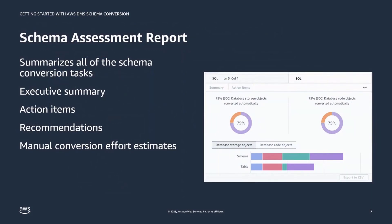DMS Schema Conversion provides a schema assessment report that summarizes all schema conversion tasks. The summary tab shows the number of items that can be automatically converted for database storage objects and code objects, and provides an estimate of the required effort to create equivalent schema items in the target database. The action items tab lists items that can't be automatically converted, providing a description of the issue and prescriptive guidance on manual conversion. Similar action items are grouped and the number of occurrences is displayed.